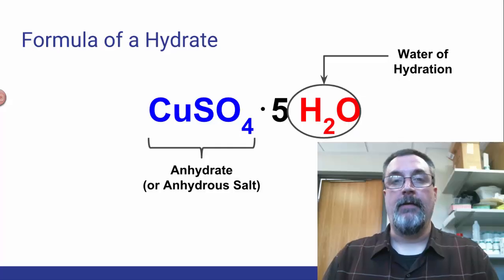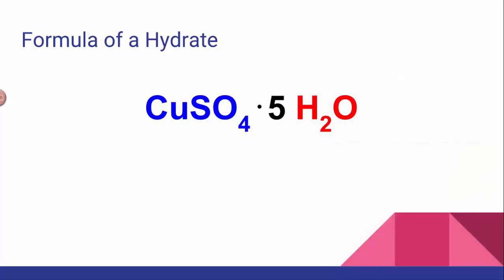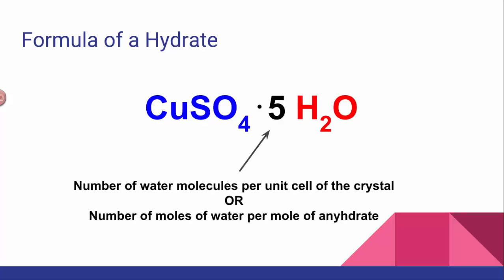The 5 written there is important — it's not just an arbitrary number, it's a specific number. It's the number of water molecules that get caught into one unit cell of a crystal. A more useful laboratory way of thinking about it: it's the number of moles of water that gets stuck in one mole of the anhydrate. So as one mole of CuSO4 ions come together and crystallize to form solid compound, we get 5 moles of water trapped in that crystal.